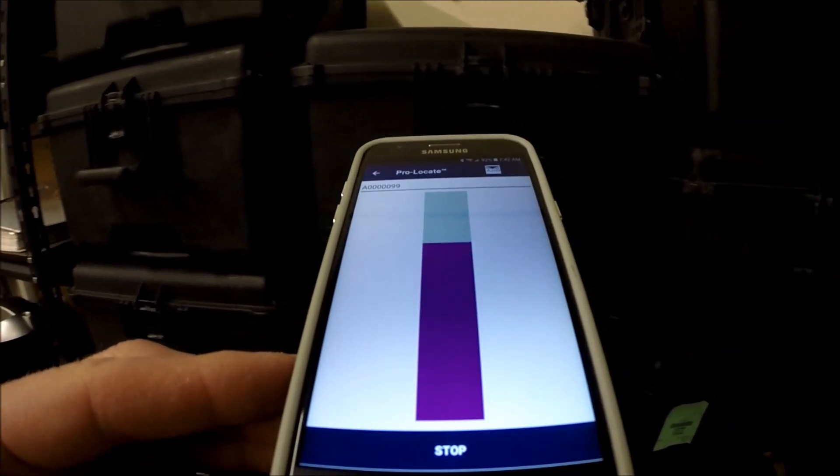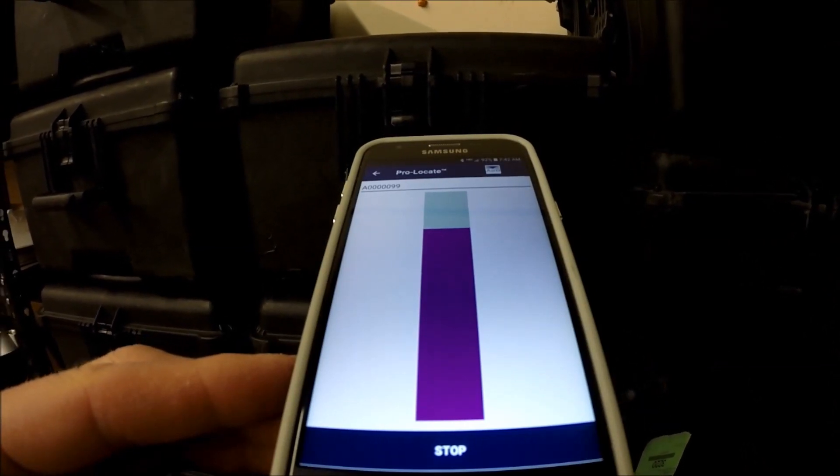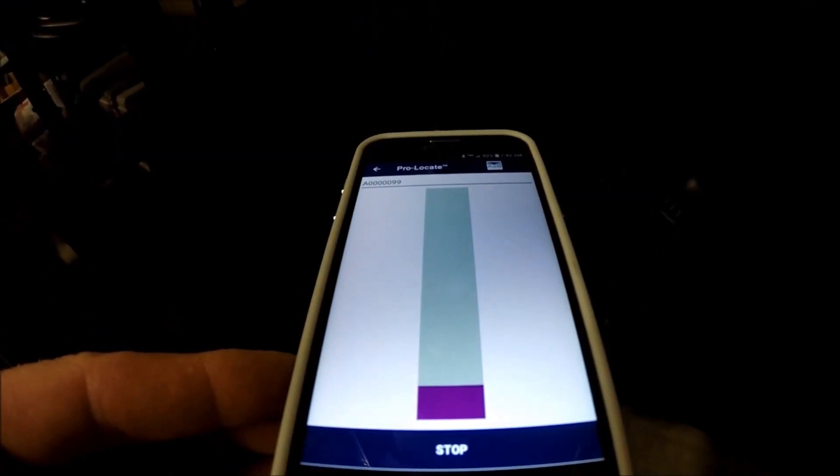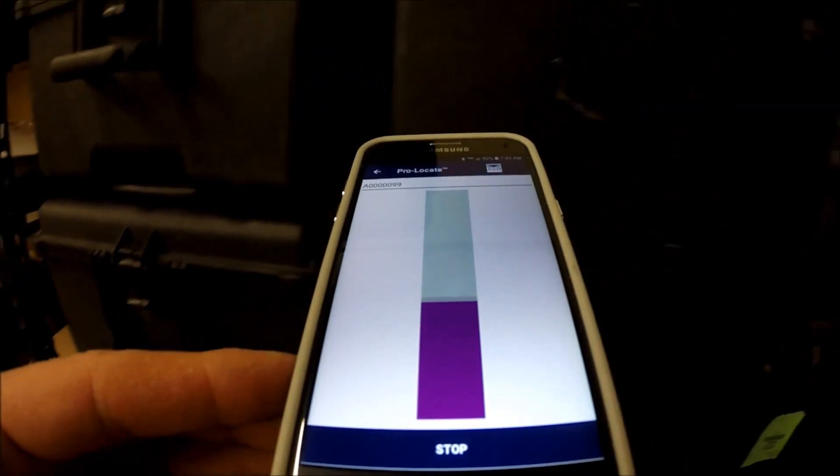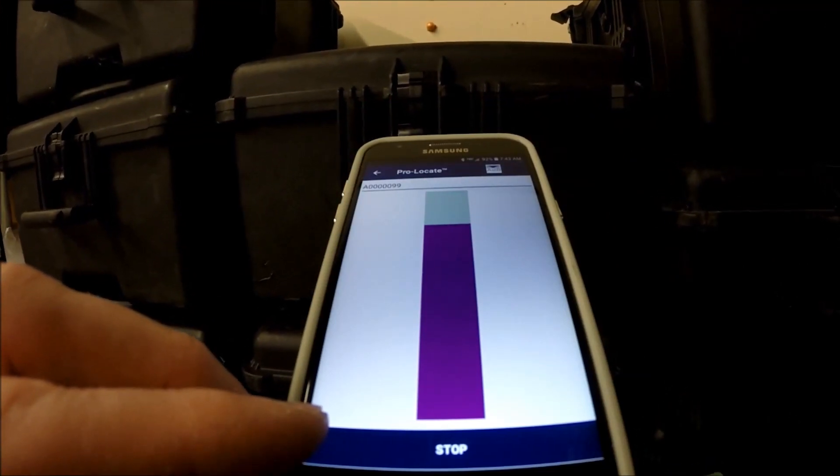As I get closer to the pelican cases, I know that I'm on top of the one that I'm certain has the asset in it. If I move away from that asset toward other pelican cases, it gets much weaker. So as I get back toward the pelican case, I can see the intensity increase.